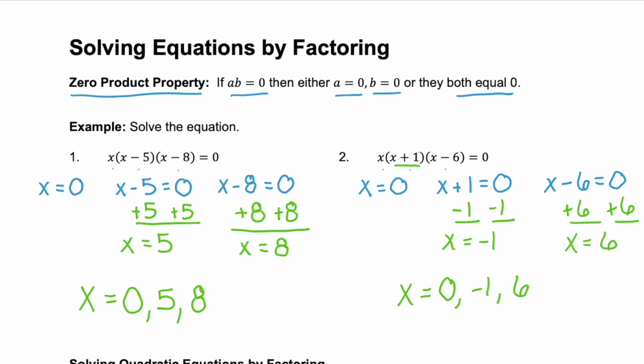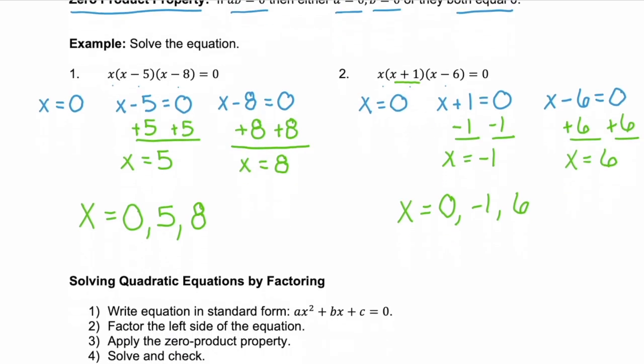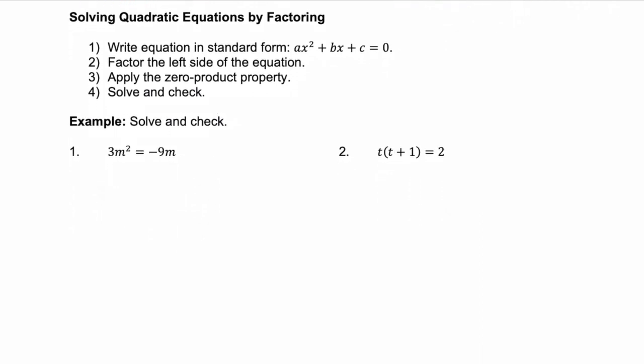Let's look at some quadratic equations, or polynomials, that we need to factor and solve. We have four steps when solving a quadratic equation. A quadratic is in the format ax squared plus bx plus c, and we need it equal to zero to use our zero product property. Step one: make sure your equation is in standard form. Step two: factor. Step three: apply the zero product property. Step four: solve and check. Always check your answer.